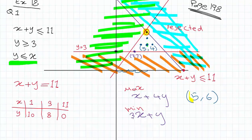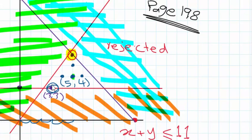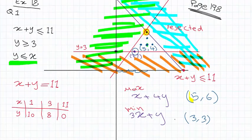Part B asks for the minimum value of 3X plus Y. The minimum point in this region is (3, 3) — the only whole-number point that is smallest. We can't choose X equals 4 because we have smaller values; there's no whole number in this region smaller than 3 for either X or Y. So (3, 3) is the minimum point. Substituting: 3 times 3 equals 9, plus 3 equals 12. Question 1 done.